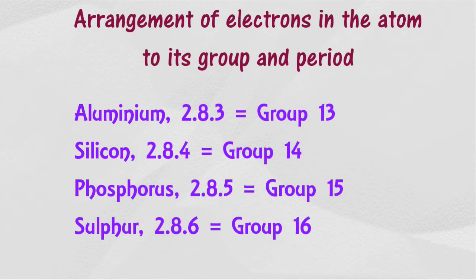For group 13 and above, the number of valence electrons must be added to 10 in order to determine the group.